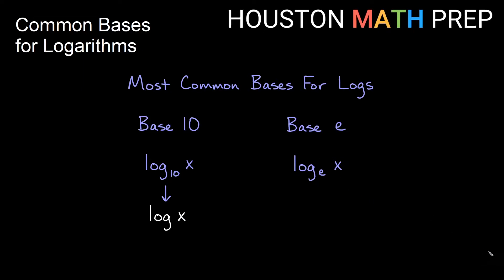Log base e of x is more commonly written as the ln of x and that's just telling us that it's the natural log of x which goes with the natural exponential. So log of x we'll think of as log base 10. Ln of x we'll think of as log with a base of e.